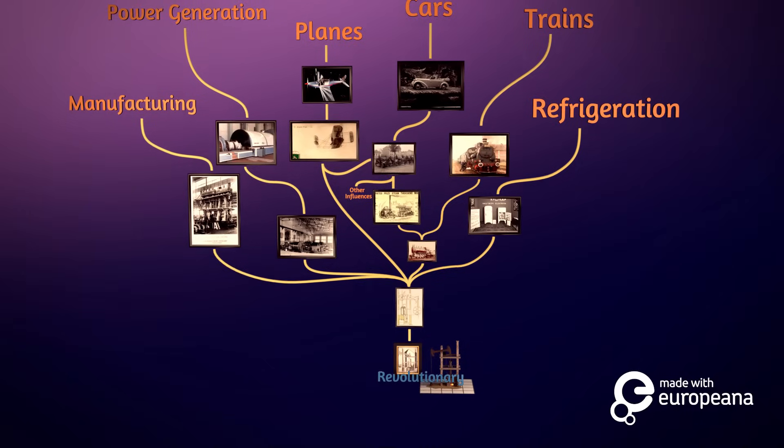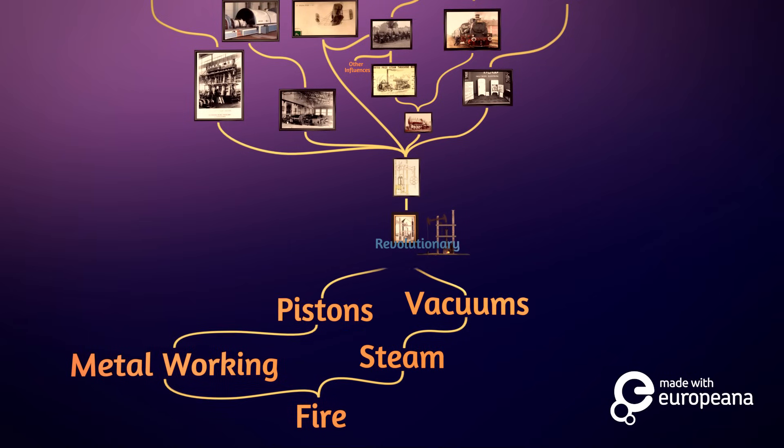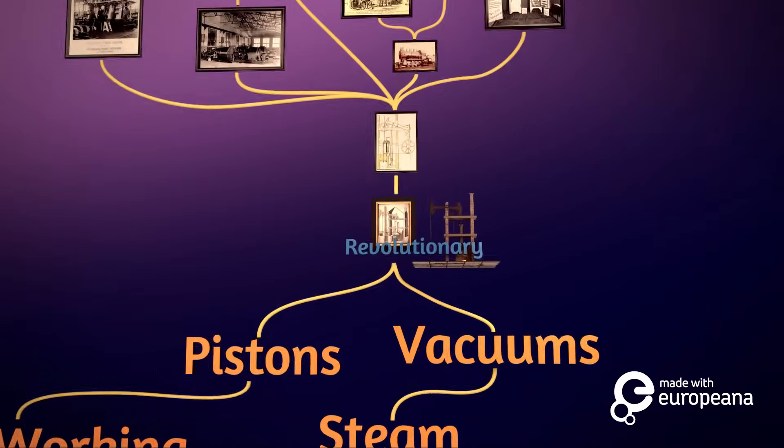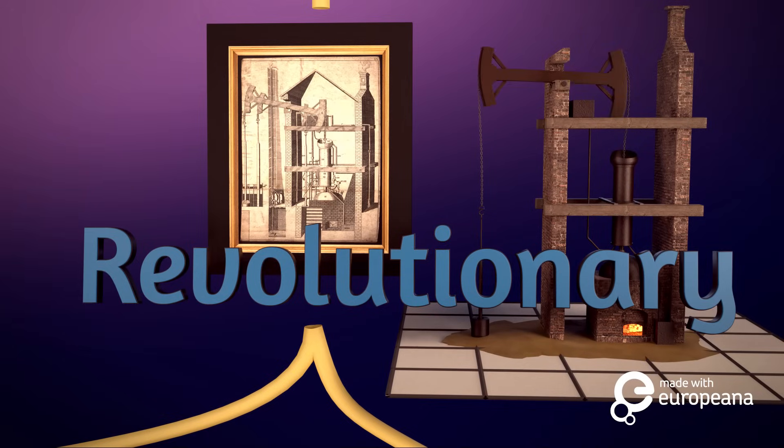While the idea of metalworking and boiling water with fire had been around since antiquity, and in the 16th and 17th centuries the understanding of vacuums and pistons had improved, Newcomen's idea of combining fire, steam, pistons, and vacuums in a cyclical engine to do continuous work was groundbreaking.